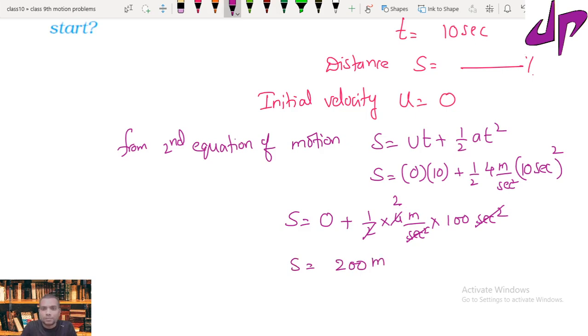here meter. So the final result, the distance covered by the car s equal to 200 meter. Very simple problem.